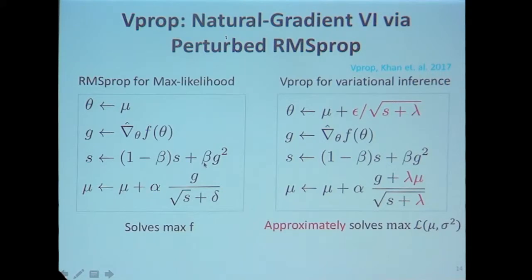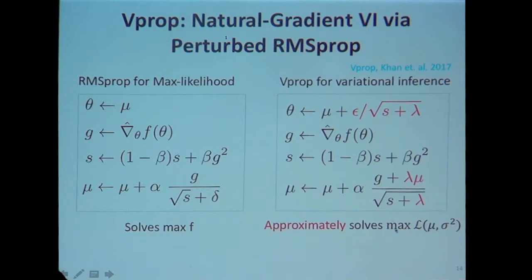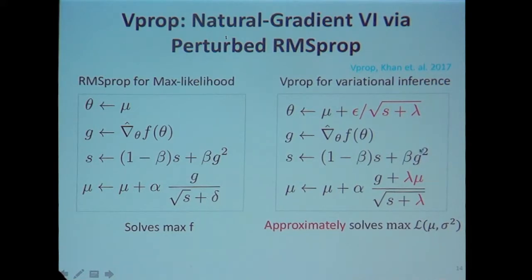To summarize: this algorithm just perturbs the weights and adds the contribution from the prior, achieving approximate natural gradient variational inference and converging to a local minimum of the variational objective approximately. If you use the exact Hessian, everything is exact; if you use G-squared, you make an approximation.